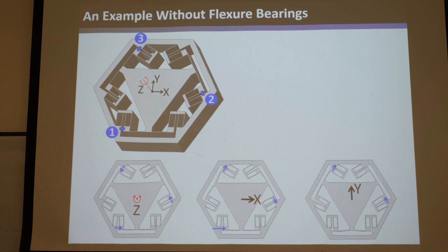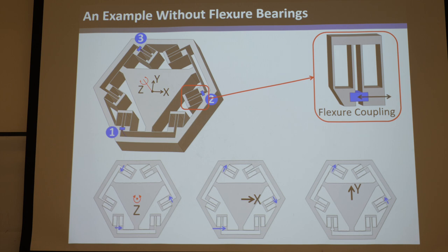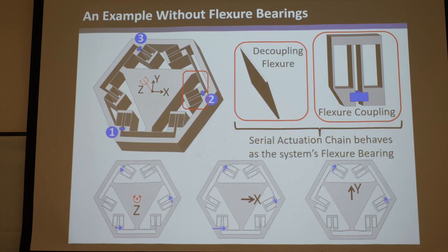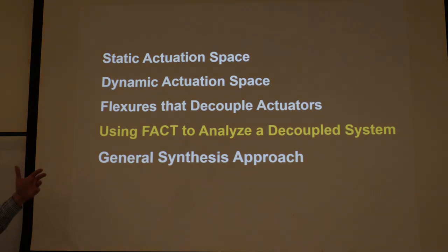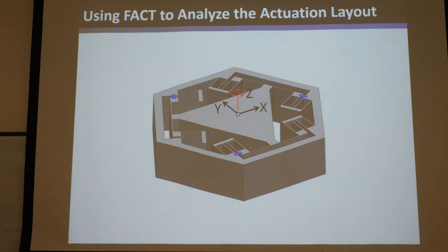You can do none in the serial actuation chains, all in them, or any combination between — half the constraint with flexure bearings and the other half with serial actuation chains that decouple. There are a lot of different options, and I came up with a systematic approach to go through them all. In this design, this simple blade was the decoupling flexure and together with the flexure coupling forms the serial actuation chain, with the system's flexure bearings separately. This section goes through how to comb through all the freedom and constraint spaces and actuation spaces to analyze how this works, and the next section reverses it to provide the systematic synthesis approach.